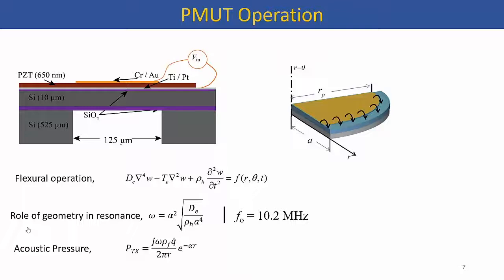A typical PMUT works by having a stack of layers — you require at least two: one passive material that doesn't do much, and one piezoelectric material. You apply voltage across the piezoelectric material, which causes generation of in-plane stresses. These in-plane stresses lead to a bending moment, and that bending moment causes flexural mode of vibration in the membrane. This vibration is maximum when the bending moment location is at the point of maximum slope in the vibration mode, which happens to be around 65 to 70% of the total membrane.